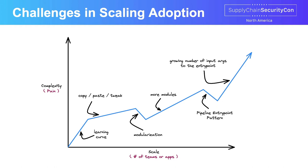I've probably seen this pattern six or seven times independently: teams end up simplifying their pipeline to just call an entry point method. Your Jenkins file would just say pipeline.run and pass it a bunch of arguments, abstracting away all the complicated bits of the DevSecOps pipeline. You simplified configuration for individual teams — they just copy and paste the file and pass it some input parameters. But on the backend, you have a massively complex shared library, and over time, as you scale more teams, the number of possible input arguments goes way up to support all these different use cases.